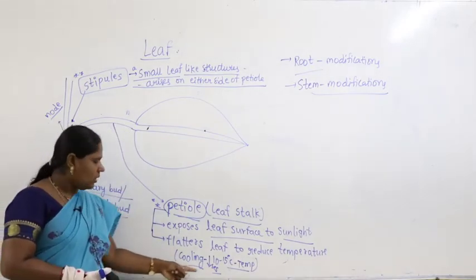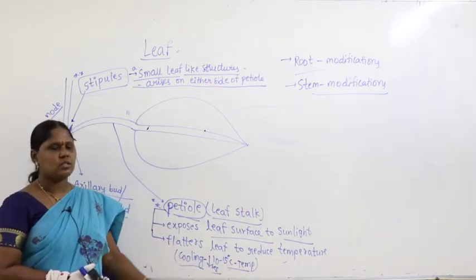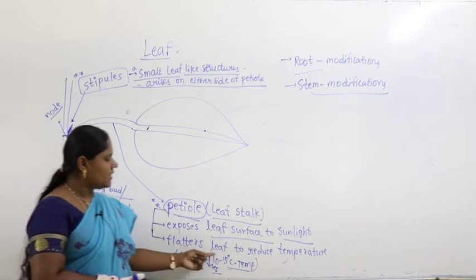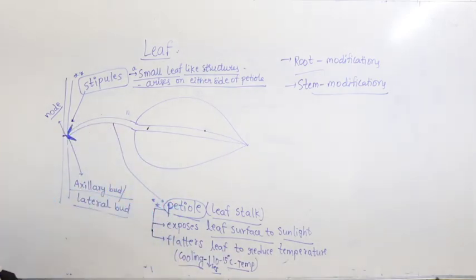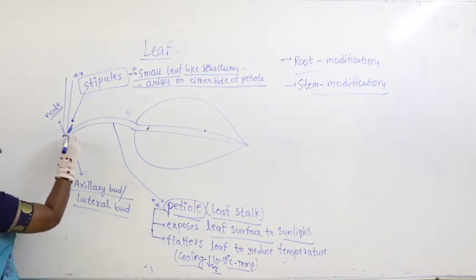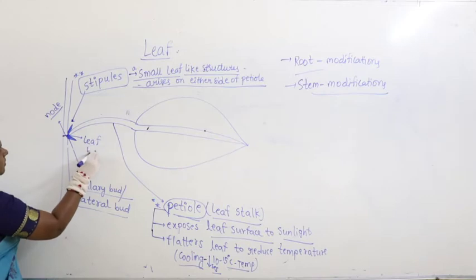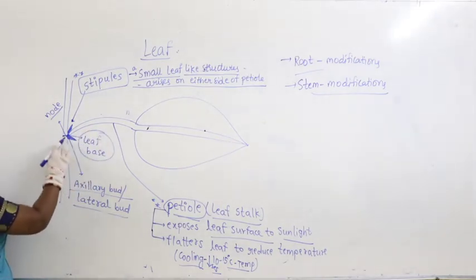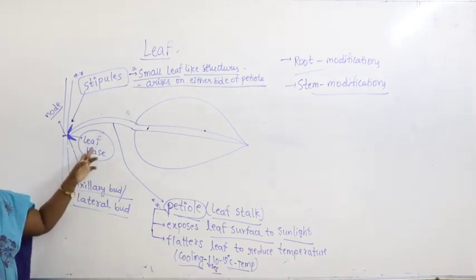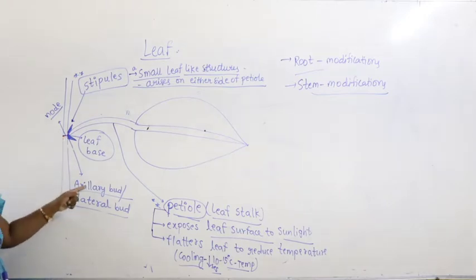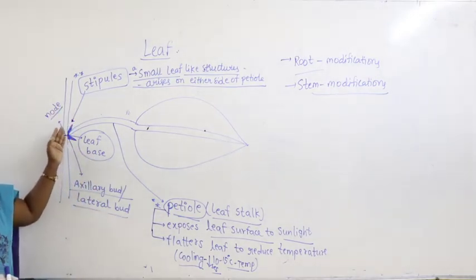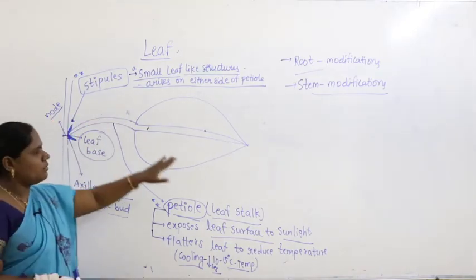The petiole causes cooling by decreasing temperature 10 to 15 degrees centigrade through vigorous leaf movement. The leaf base contains two important things: the axillary or lateral bud, and stipules — small leaf-like structures that arise from the leaf base alongside the petiole.